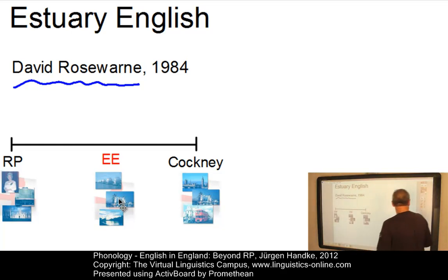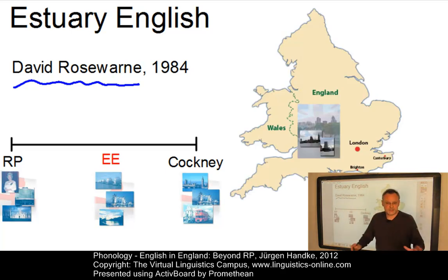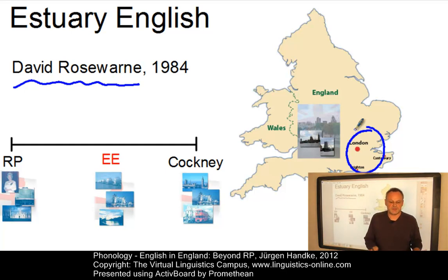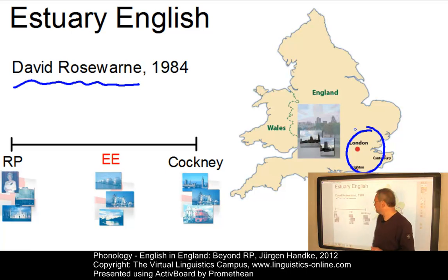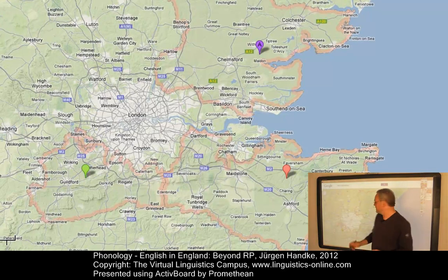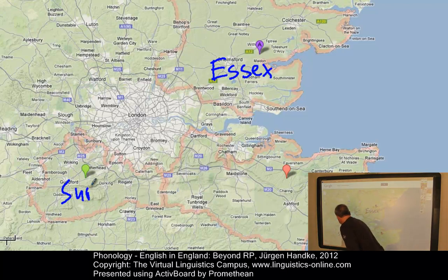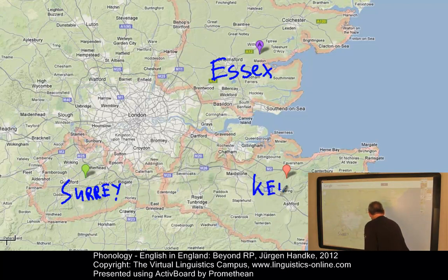In contrast to RP, Estuary English is a regional dialect. It is the most influential phonological dialect in the southeast of England. Looking at a map, the heartland of Estuary English covers several counties in the southeast, including Kent.